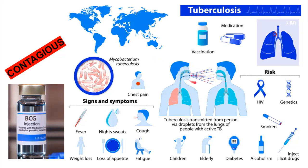Since TB spreads just like coronavirus, people in close contact with an infected person can easily contract it. For example, in a jail where many people live together in a small area, if one person develops TB, others can contract it easily. This is especially concerning in jails in Pakistan, India, and other underdeveloped countries, since it is a contagious disease.